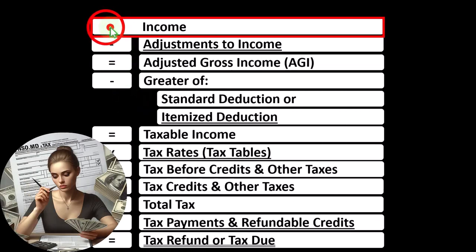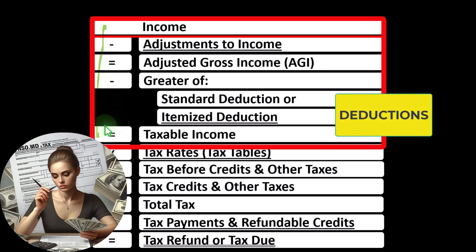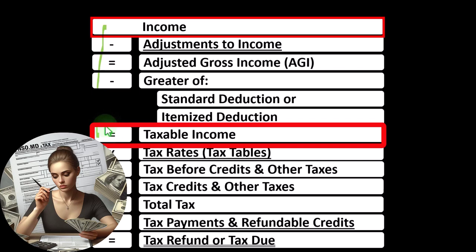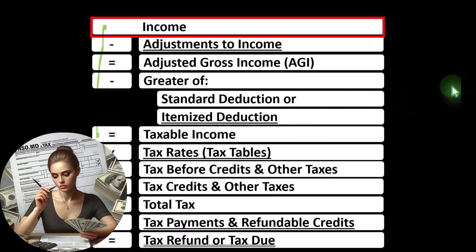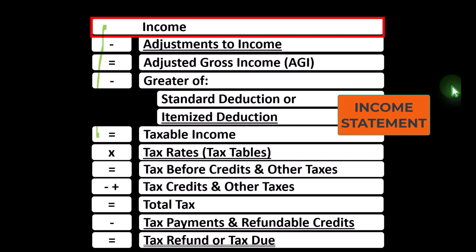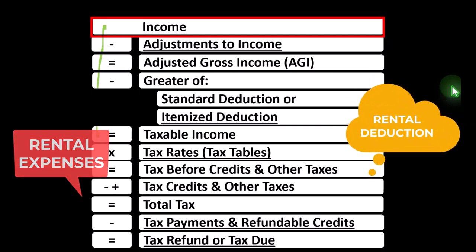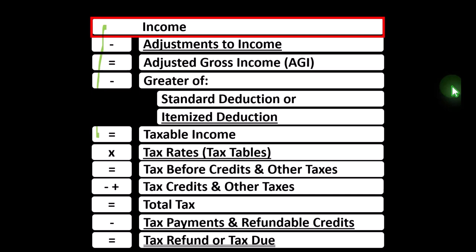Remember, the first half of the income tax formula is basically that income statement where we have income minus — instead of expenses, we call them deductions — resulting in, instead of net income, we call it taxable income. The Schedule E rental income, like the Schedule C business income, is in essence an income statement in and of itself, having rental income minus rental expenses, resulting in net rental income rolling from Schedule E into line one income of the income tax formula.